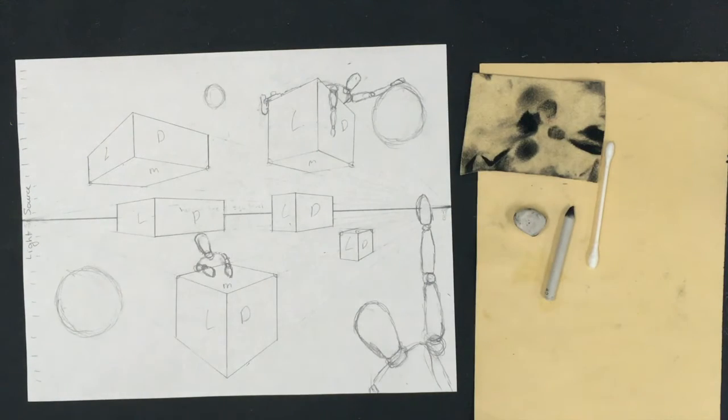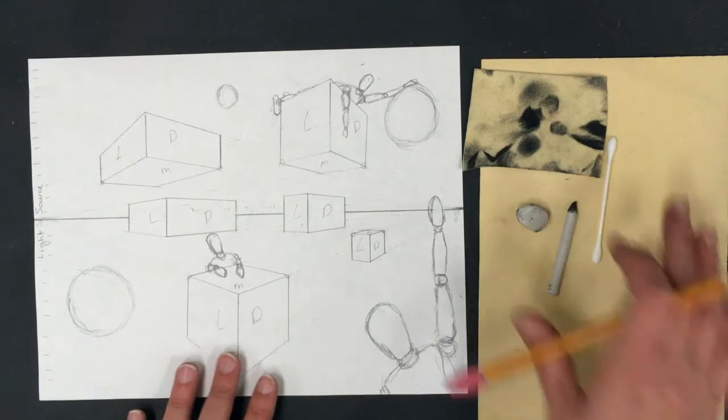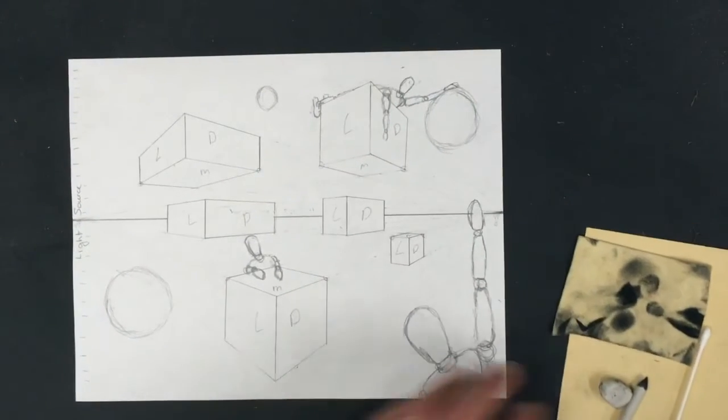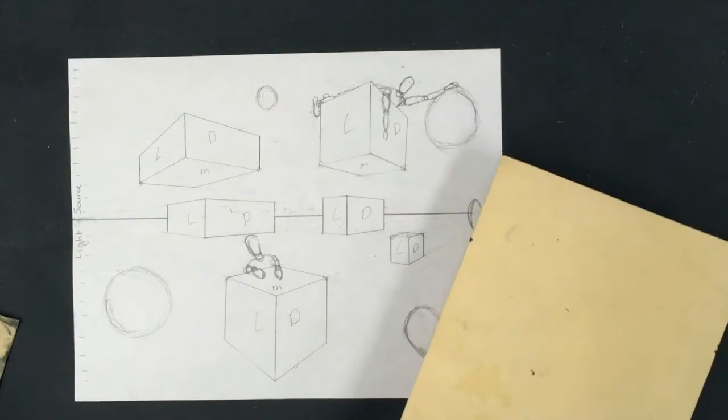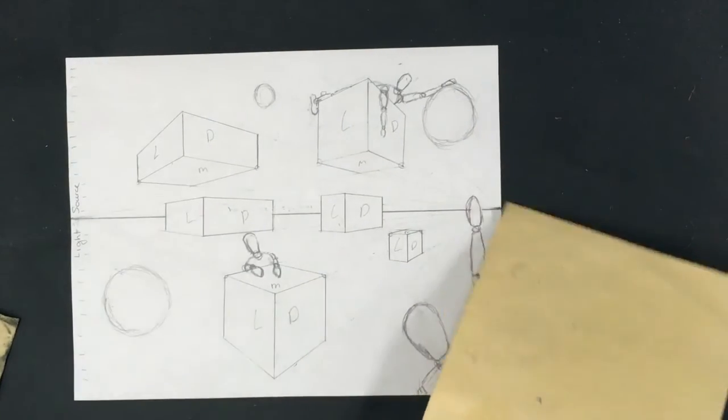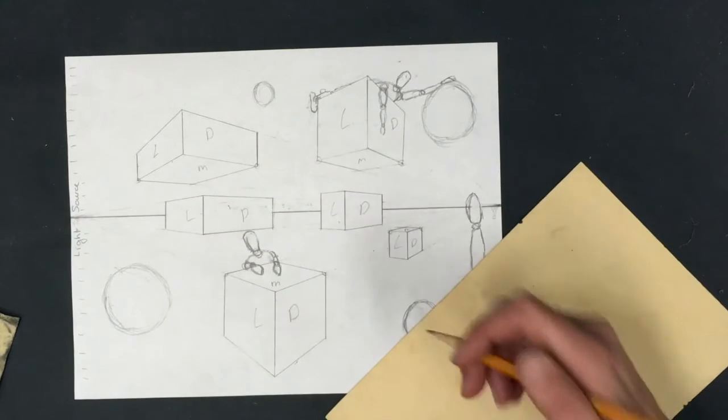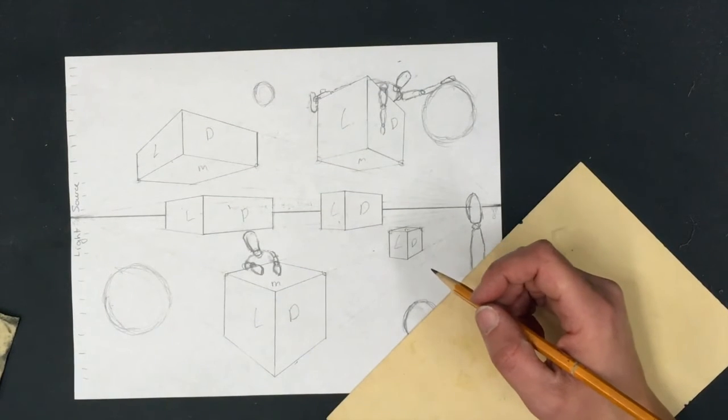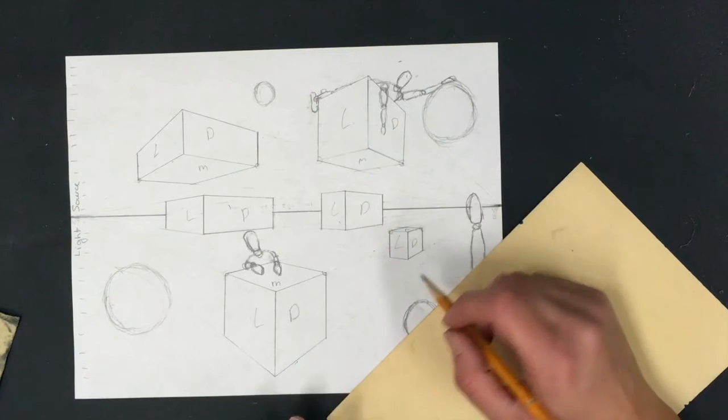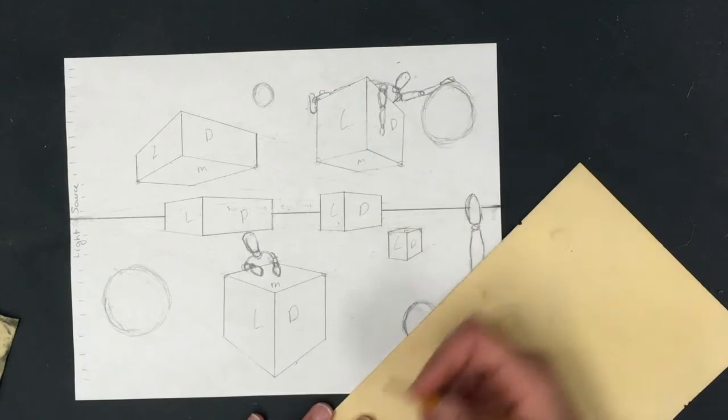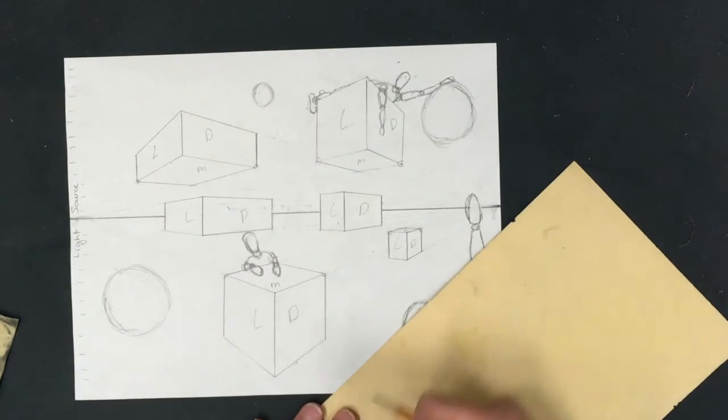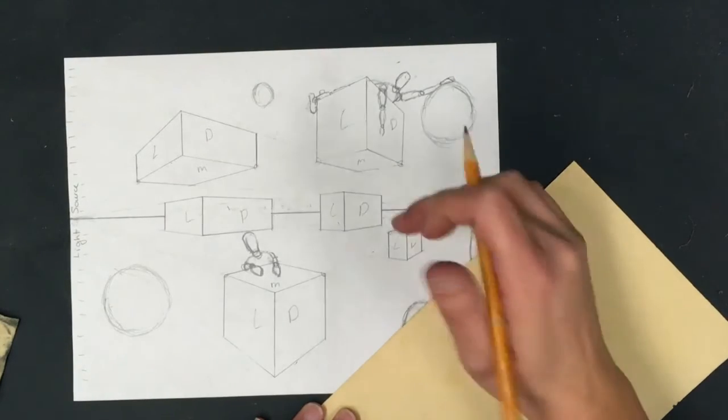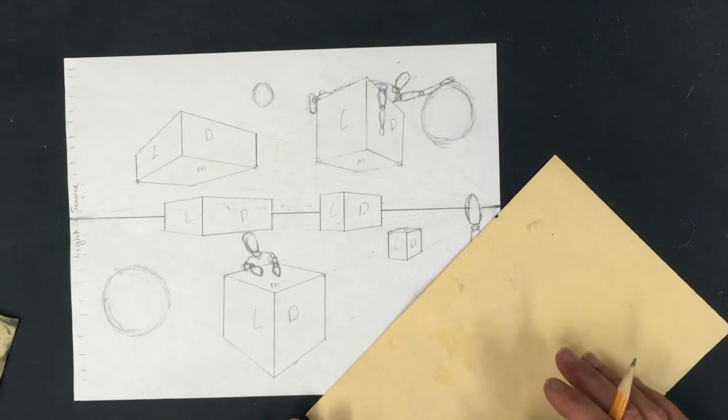As we start shading, some good things to follow: sometimes we get smudging happening, so you may want to grab a sheet of scrap paper or one of my little shade guards. Have something to rest your hand on so that as you're shading over your drawing, you're rubbing against the paper and not your drawing. That's gonna stop you from smudging everything.